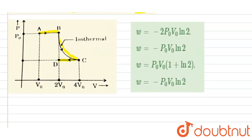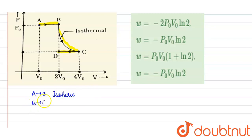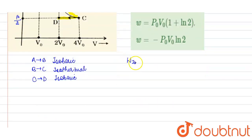This curve is divided into A to B, B to C, and C to D. From A to B, an isobaric process is happening — isobaric means pressure is constant. From B to C, an isothermal process is happening. From C to D, again an isobaric process is happening because pressure is constant at p0 by 2, which is half of p0.